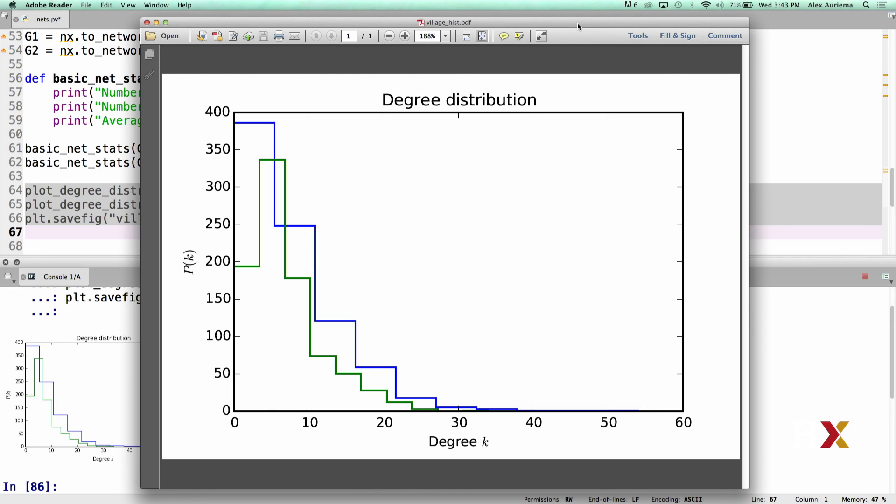This suggests that the ER graphs are likely not good models for real-world social networks. In practice, we can use ER graphs as a kind of reference graph by comparing their properties to those of empirical social networks. More sophisticated network models are able to capture many of the properties that are shown by real-world networks, but we will not go into those details here.